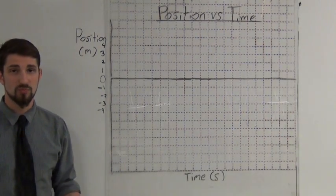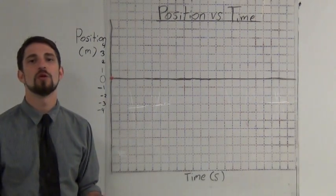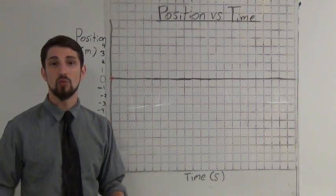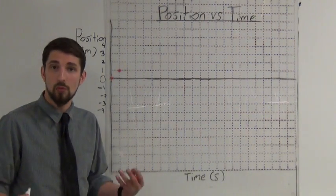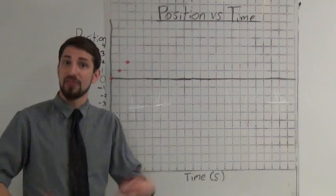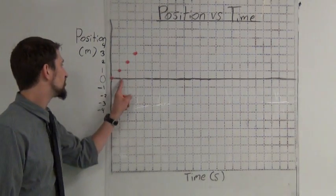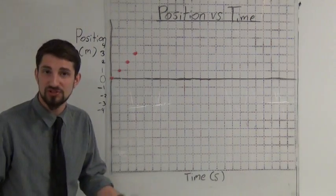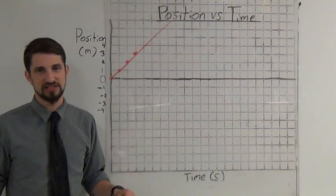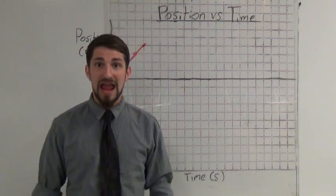Let's describe this object's motion, starting at zero. Assume this person is moving one meter per second in the positive direction. After one second he's at one meter, after two seconds at two meters, after three seconds at three meters. If you're walking one meter per second, every second you go one meter further from your original position. We can draw a straight line to show this person is moving at a constant velocity.